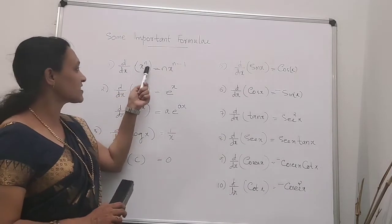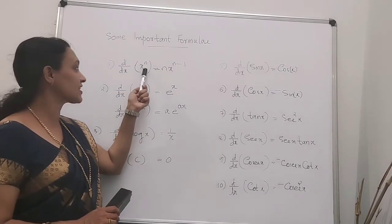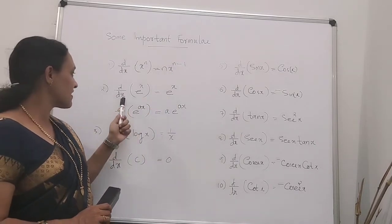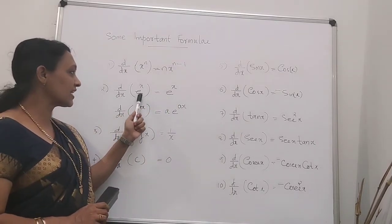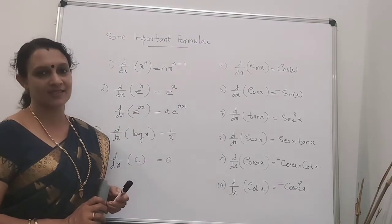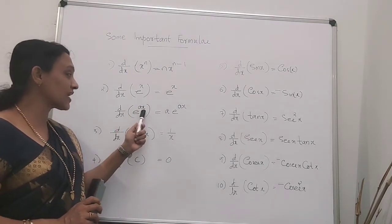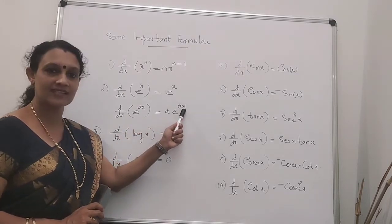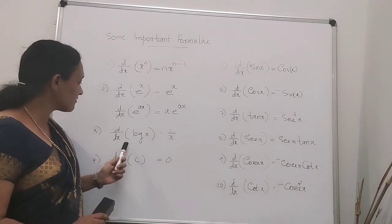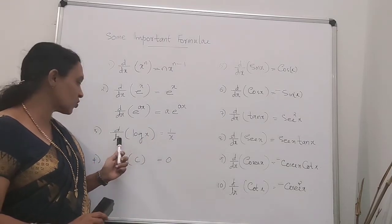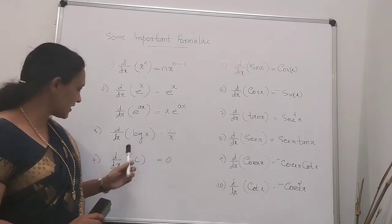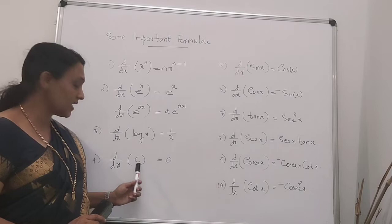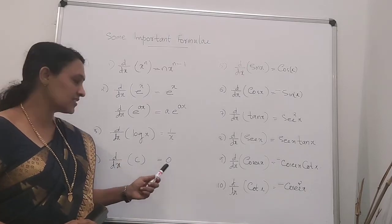The derivative of x raised to n is n times x raised to n minus 1. The derivative of e raised to x is e raised to x. But if it is e raised to ax, its derivative is a times e raised to ax. The derivative of log x is 1 by x. And the derivative of a constant is always equal to 0.